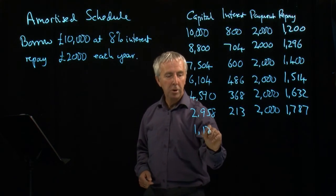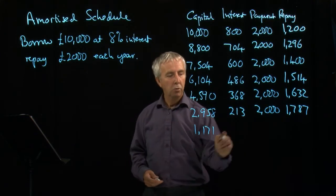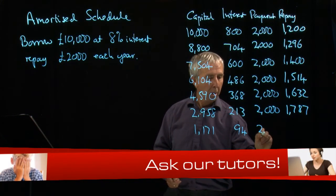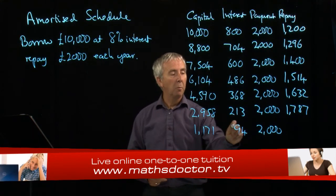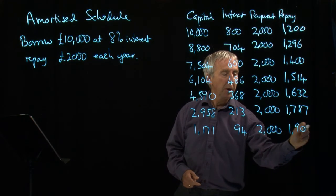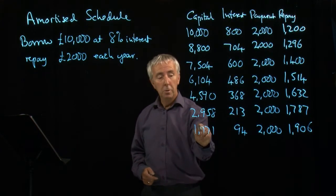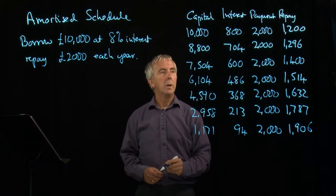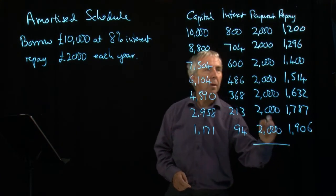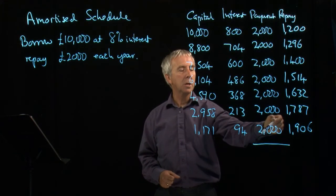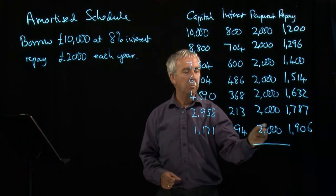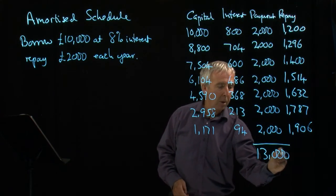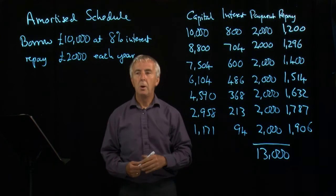Subtracting £1,787 leaves £1,171. The interest on that is £94. If I pay £2,000, I will have paid too much, because I would pay in £1,906 that year but only owed £1,171. So in practice I would stop part way through this year. If we see what we've actually spent in total — we've been doing this for about seven years — roughly £1,000 for the partial year and six full years of £2,000, so overall we've spent £13,000 on this £10,000 loan.